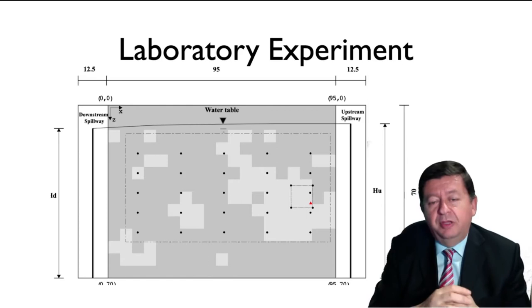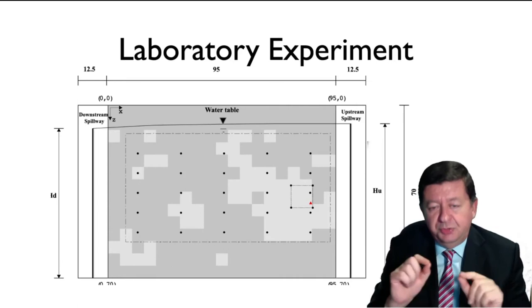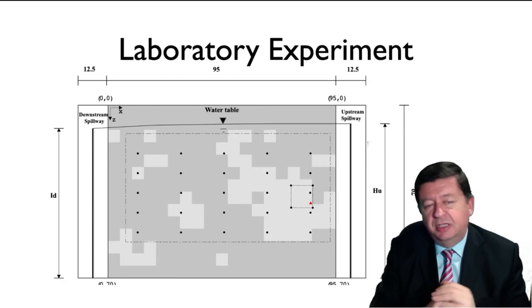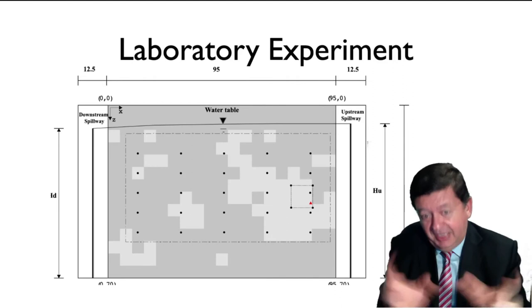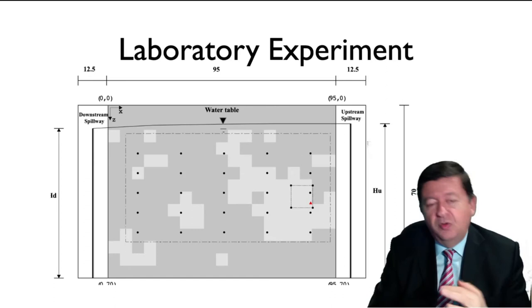At the location of the red triangle, we will place the injection. Then we will observe the breakthrough curves at the black dots shown on the figure. From that information — the breakthrough curves at those observation points — we will be able to retrieve both the architecture of the sandbox and also the location where the release happened, the time when it started and ended, and the strength of the injection.